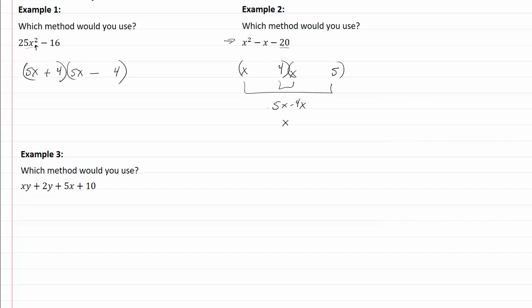I want it to be a negative, so that means 5 is going to be negative, 4 is going to be positive. So we're going to have a negative 5, a positive 4 and I'm done factoring.